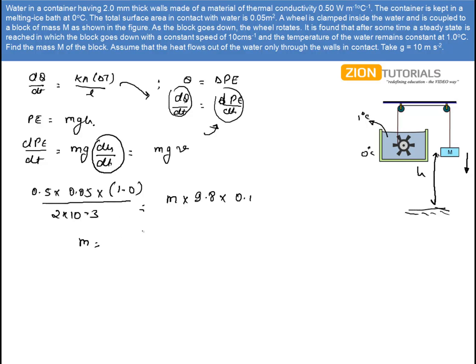So, mass is 0.5 into 0.05 into 1 divided by 2 into 10 to the power minus 3 into 9.8 into 0.1. On solving this, I get the mass as 12.5 kg. That is the answer.